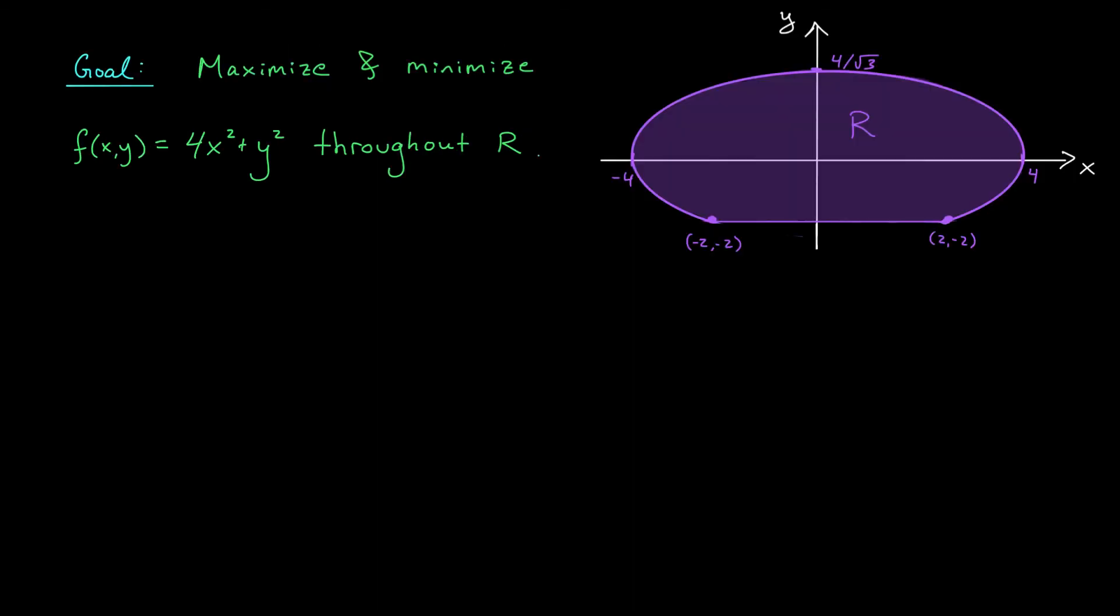Okay, we've determined our region R. So what's next? Well, we need to find our maxes and mins. Notice that here we're optimizing a nice continuous function f(x,y) equals 4x squared plus y squared over a closed and bounded set R. We therefore know from our extreme value theorem that this function really will attain global maximum and minimum values somewhere throughout the region, and our algorithm for extreme values tells us how to find them.